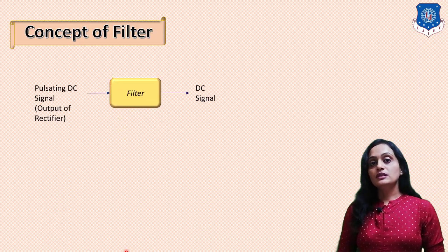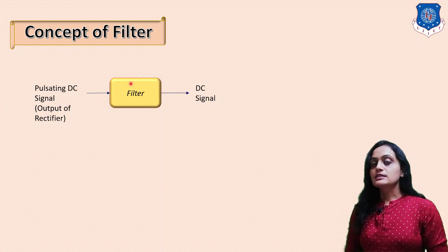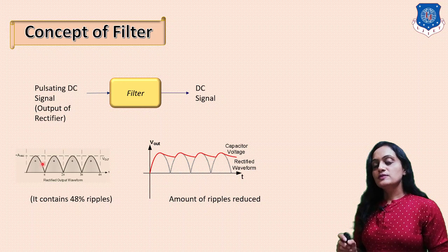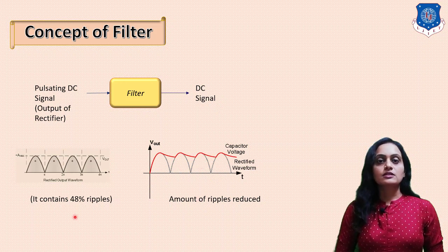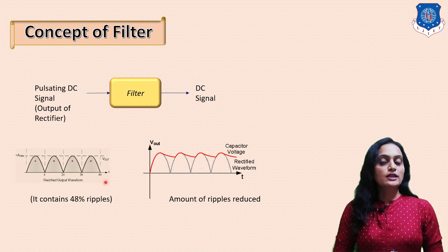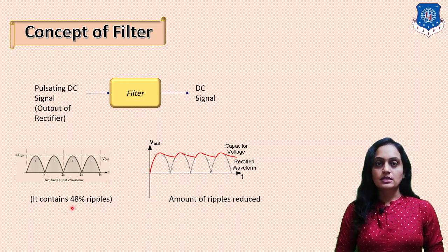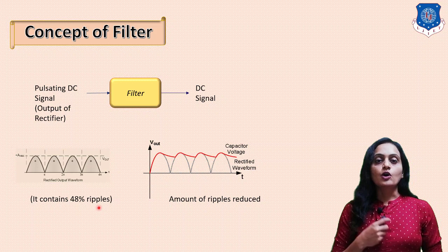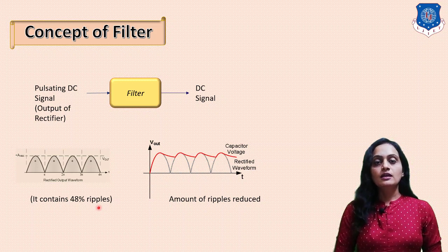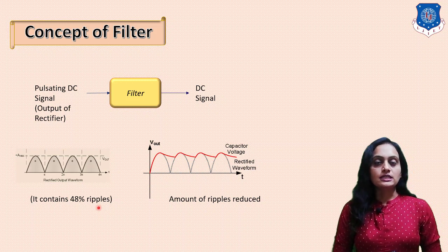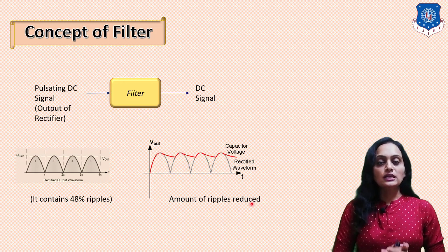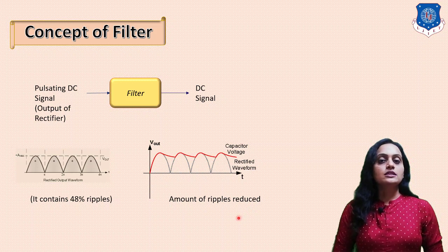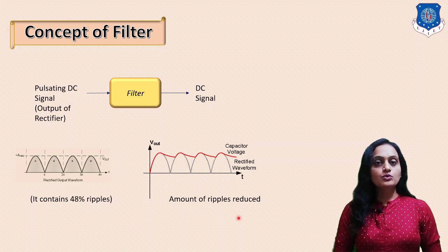The filter block is shown and the input to the filter block is rectifier output, that is the pulsating DC, and output of this filter will be the pure DC. The input signal is the pulsating DC, that is the full wave rectifier output which contains 48% ripple. So the ripple factor for the full wave rectifier was already derived as 48%, and the output of this filter has less amount of ripple than the pulsating DC. This is how the AC component or AC ripple is reduced by the filter.